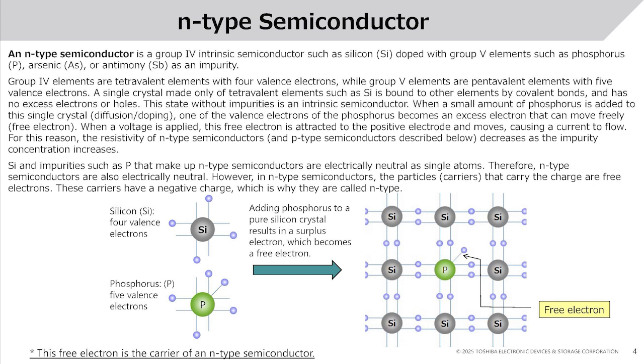However, in n-type semiconductors, the particles that carry the charge are free electrons. These carriers have a negative charge, which is why they are called n-type.